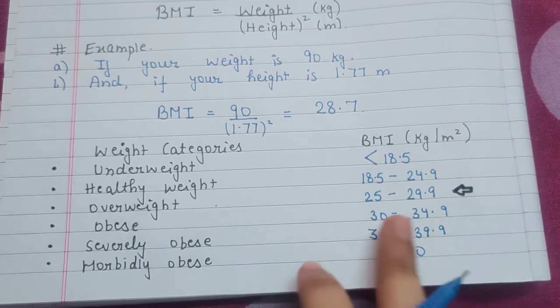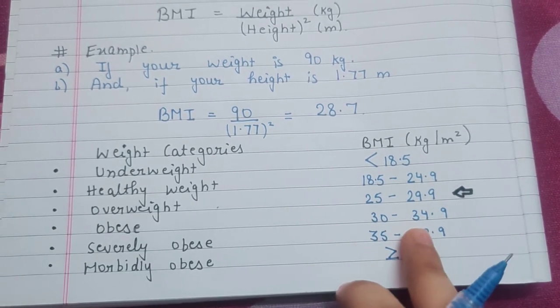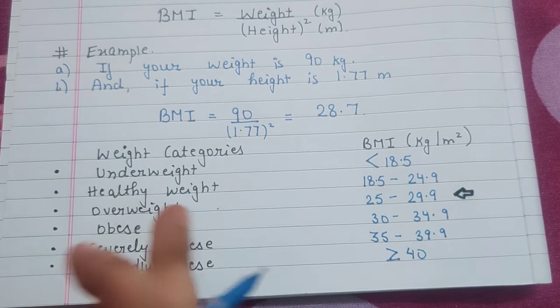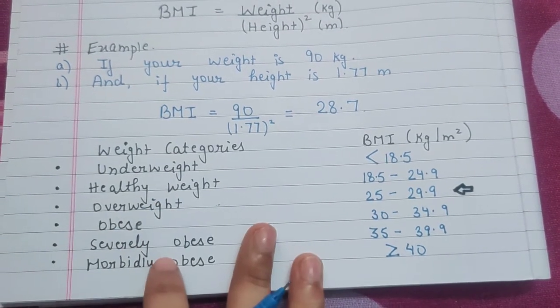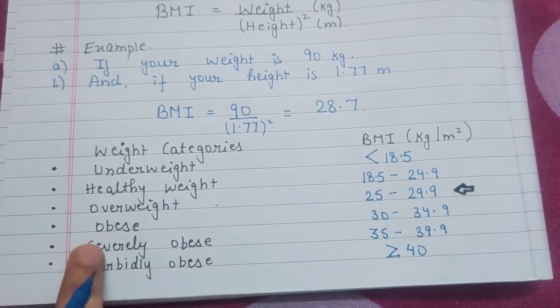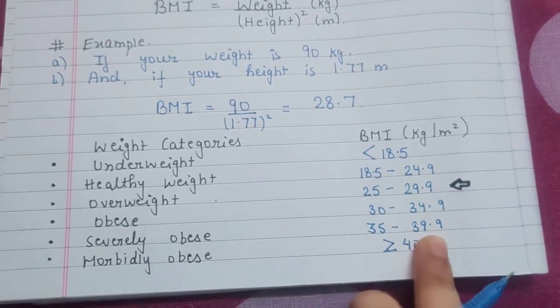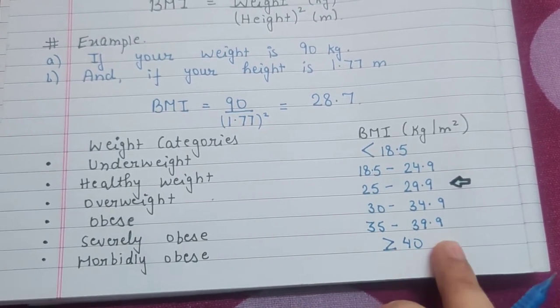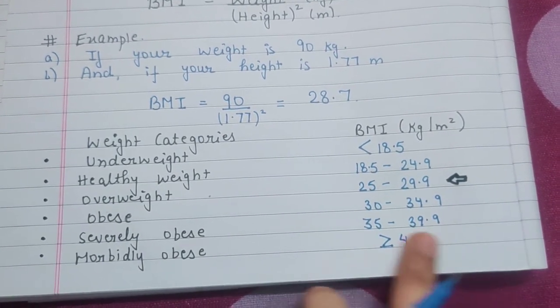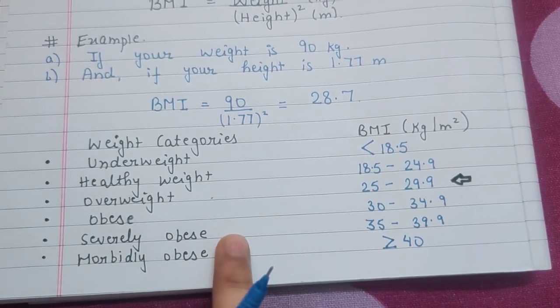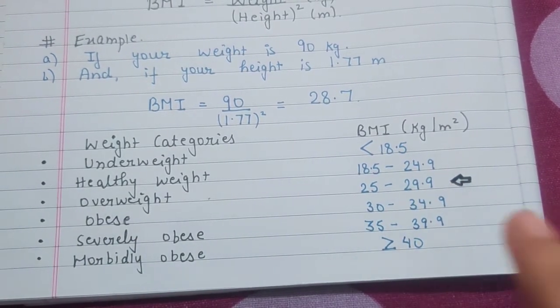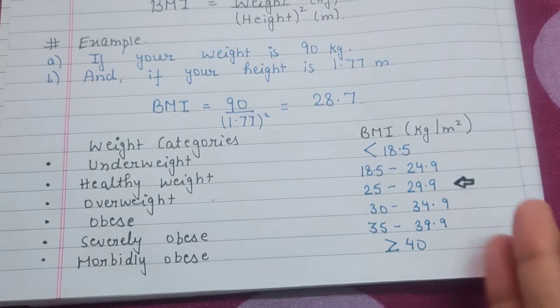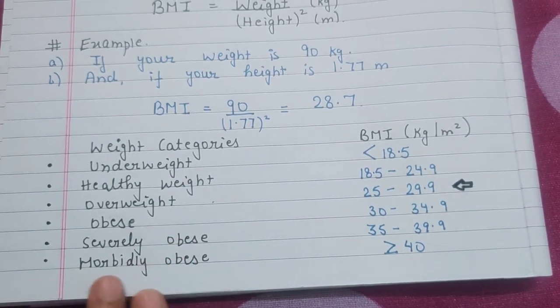If your BMI comes between 30 to 34.9, then you are obese. If your BMI is between 35 to 39.9, then you are severely obese. If the BMI comes 40 or above that, then it is morbidly obese.